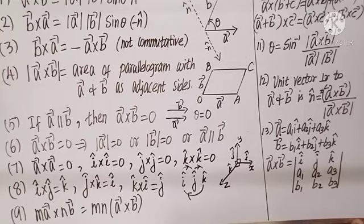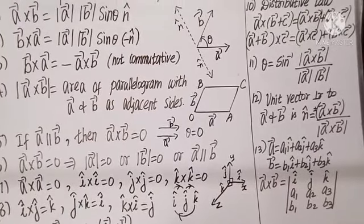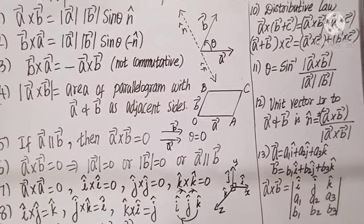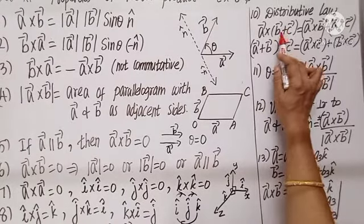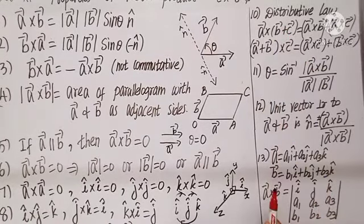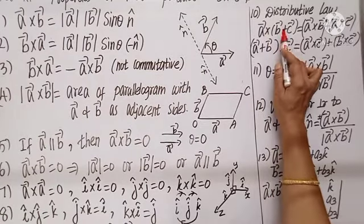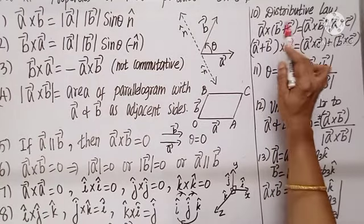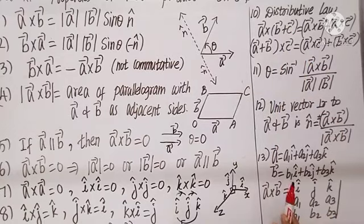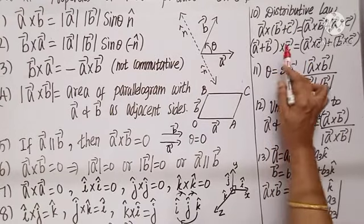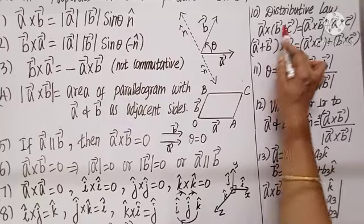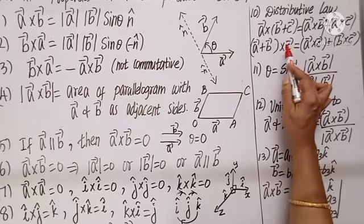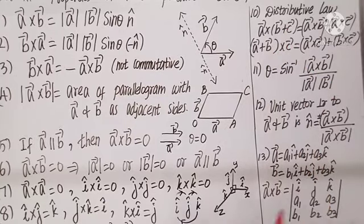Now the distributive law: A cross (B plus C) splits as A cross B plus A cross C. Similarly, (A plus B) cross C equals A cross C plus B cross C.